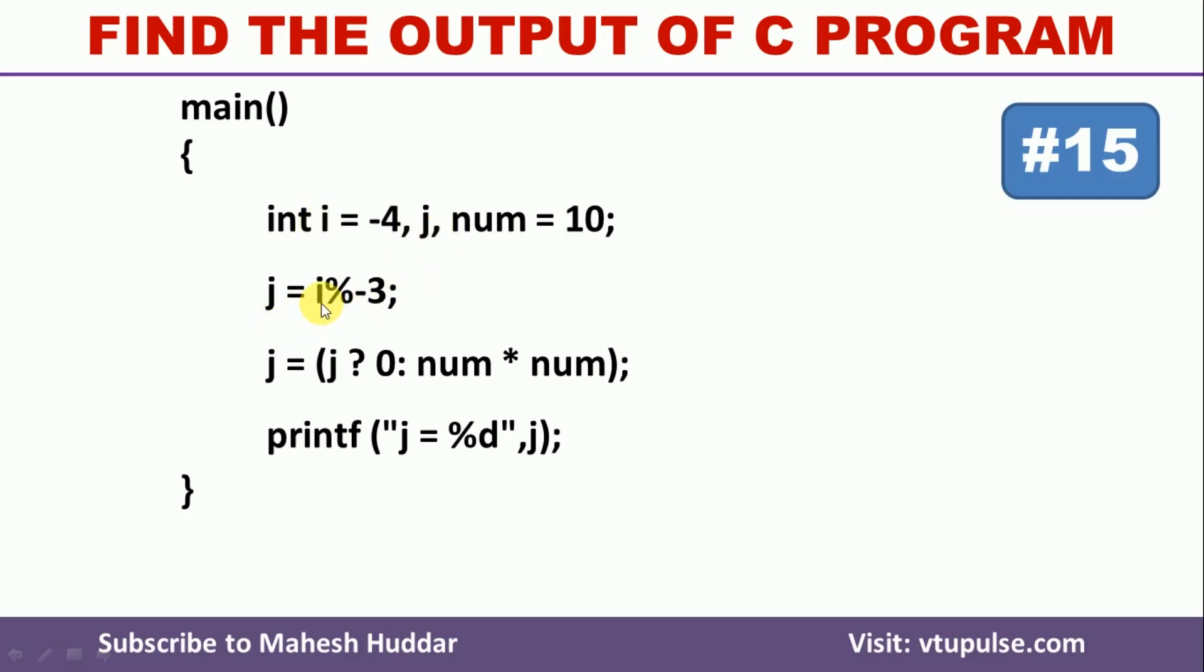Next, this expression will be evaluated. The value of this expression will be assigned to j here. After that, the value of this expression will be once again assigned to j, and finally the value of j will be displayed here. So we need to find what is the value of j after evaluating all these particular four statements.